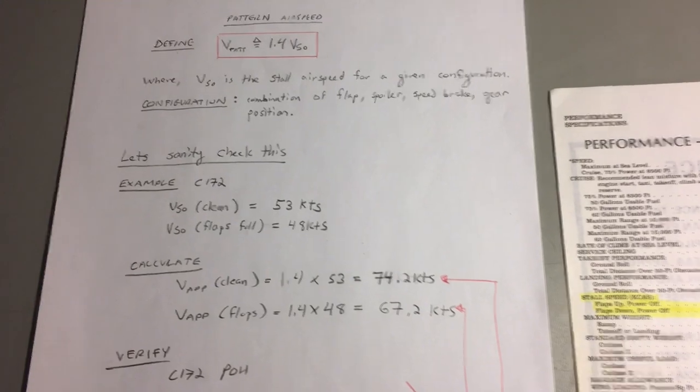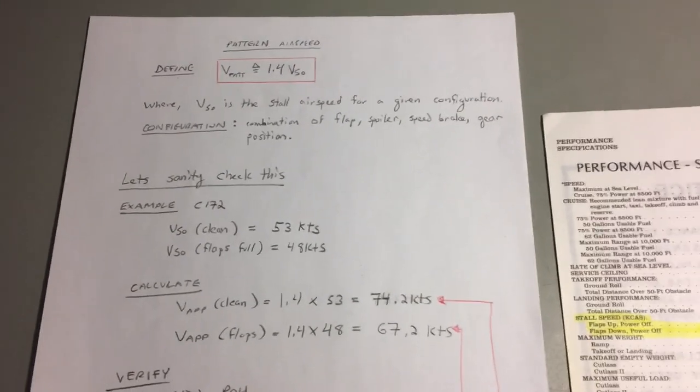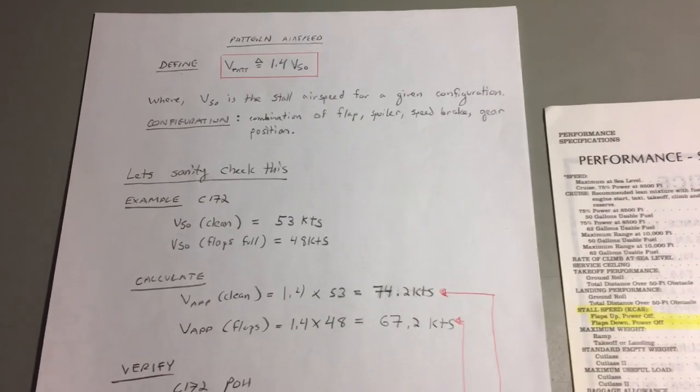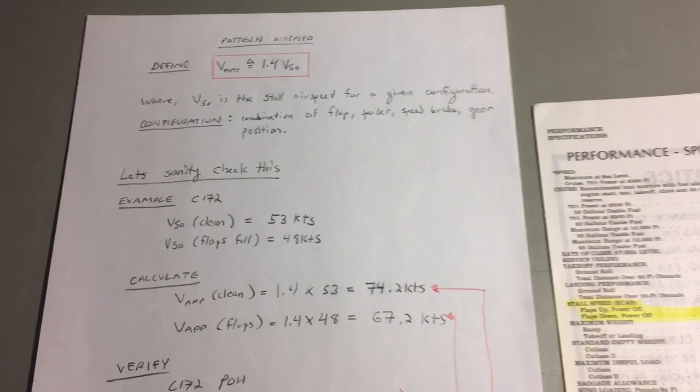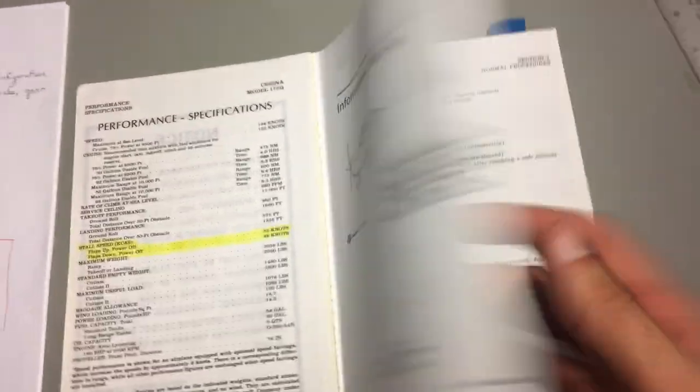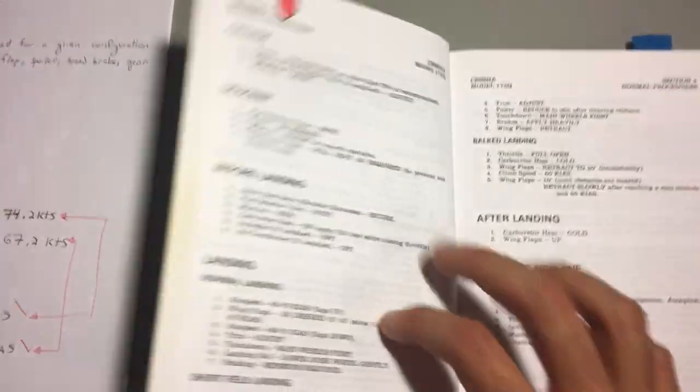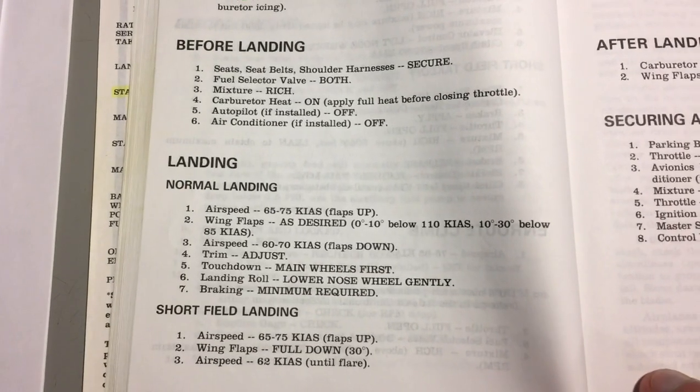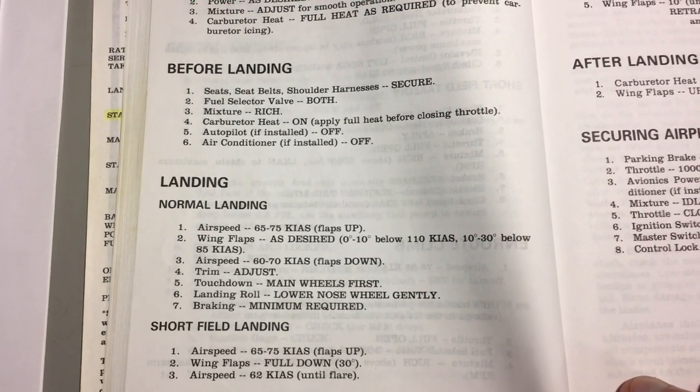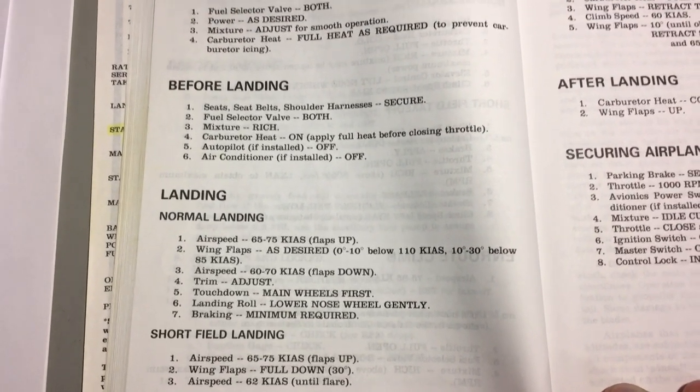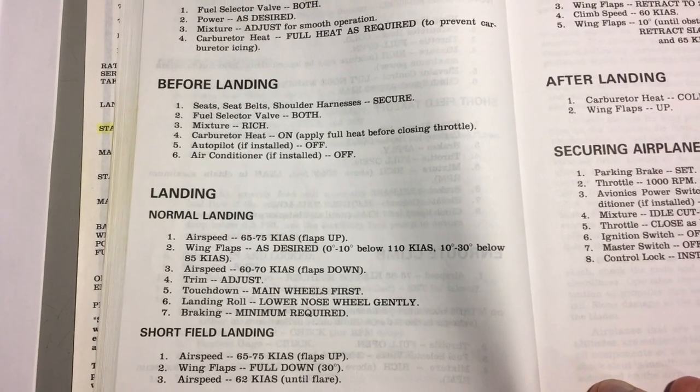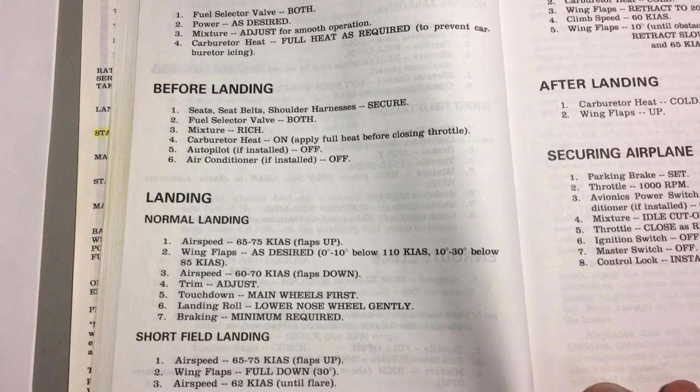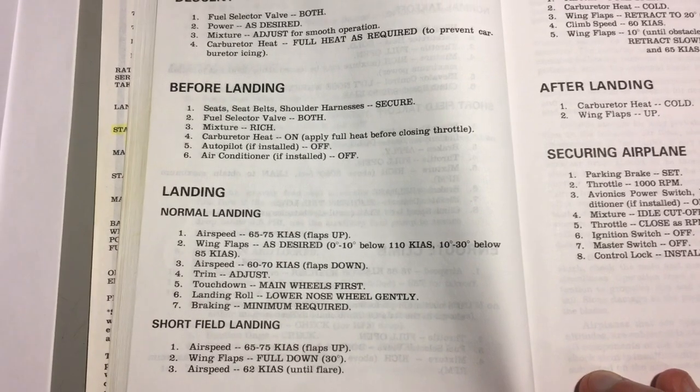Let's verify the mathematics of this equation that we use to calculate the approach speed with what is recommended in the pilot operating handbook. I'm now going to switch over to normal procedures and we see it says the airspeed is between 65 to 75 knots with the flaps up and it's between 60 and 70 knots with the flaps down.